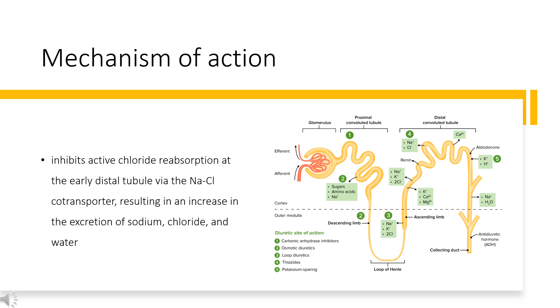This results in increased excretion of chloride and water. Thiazides like chlorothiazide also inhibit sodium ion transport across tubular epithelium through binding to the thiazide-sensitive sodium chloride transporter.